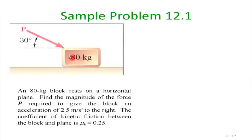We will attempt that problem sometime soon. Now here is a simple sample problem from Beer & Johnston 10th edition: a mass of 80 kg rests on a horizontal plane. Find the magnitude of force P required to give the block an acceleration of 2.5 m/s². The coefficient of kinetic friction between the block and plane is μk = 0.25.